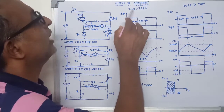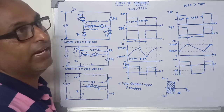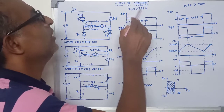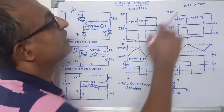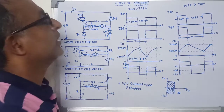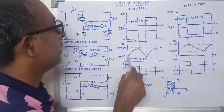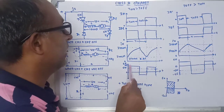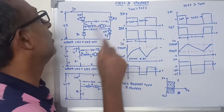Now we will study the output waveforms. The output voltage may be positive or negative depending on the values of Ton and Toff. There are two possibilities: either Ton is greater than Toff, or Toff is greater than Ton. When Ton is greater than Toff: while both CH1 and CH2 are ON, the current exponentially rises from I-minimum to I-maximum and positive load voltage appears across the load.